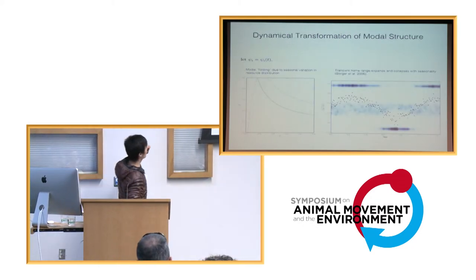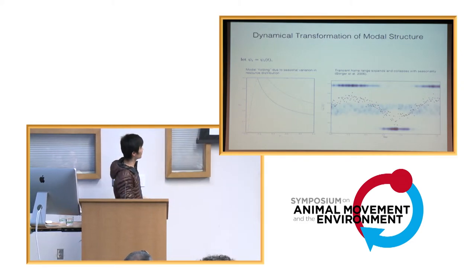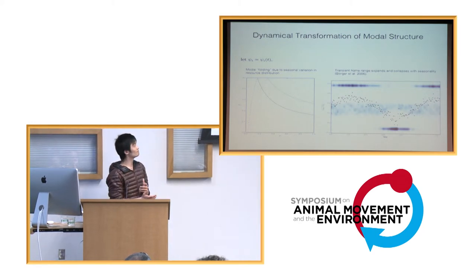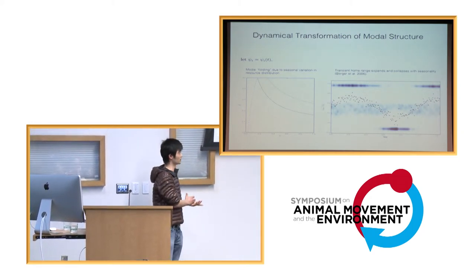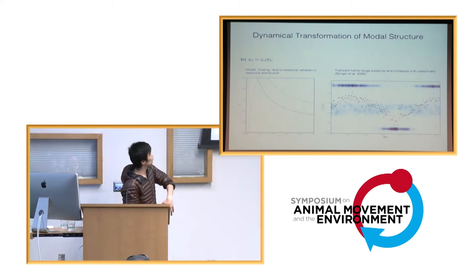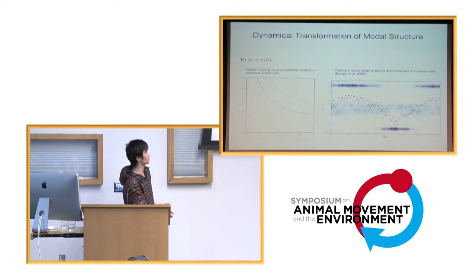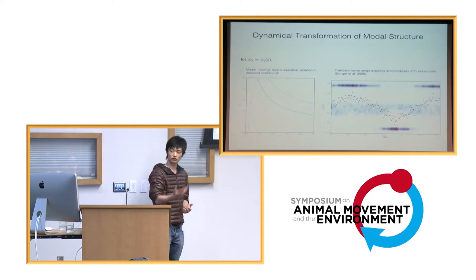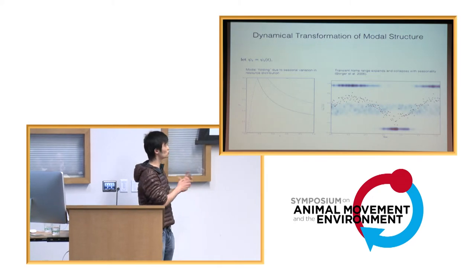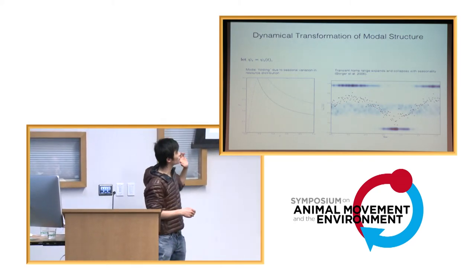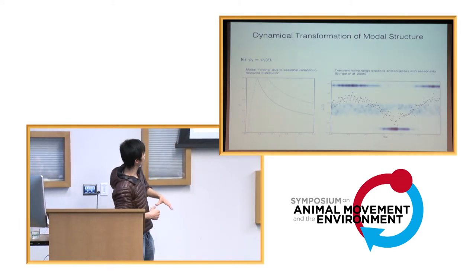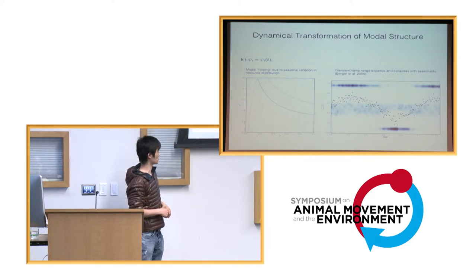So, if you set one or more of the environmental parameters as a function of time, as you see up there, you basically get a transformation of this modal regime over time. In this particular case, you have essentially a folding down effect, which then folds back up, depending on the particular time of year you're looking at. Of course, if you construct your models differently, the type of transformation you see will also be different. In the ones that we have explored, sometimes they twist, they turn. But essentially, we can generate a number of different time series regarding the home range size as a direct result of the structural transformation of the modal regime.